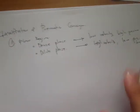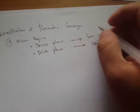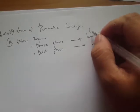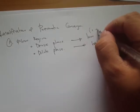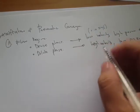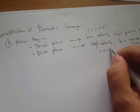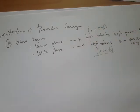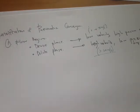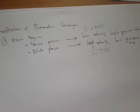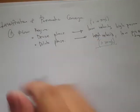Depending upon the references, some say that for dense phase the velocity range is 1 to 5 meters per second, and for dilute phase it is greater than 20 meters per second. Again, these values vary depending on the reference and the materials involved.